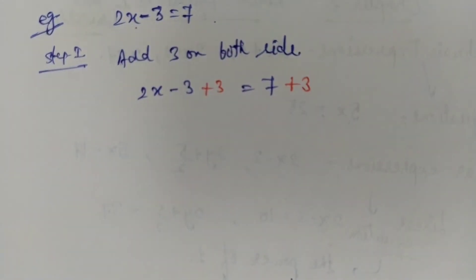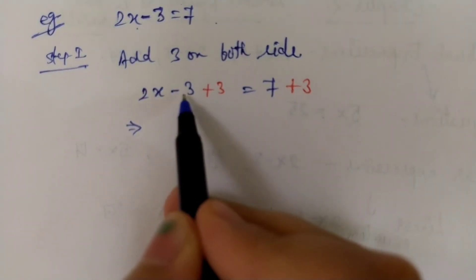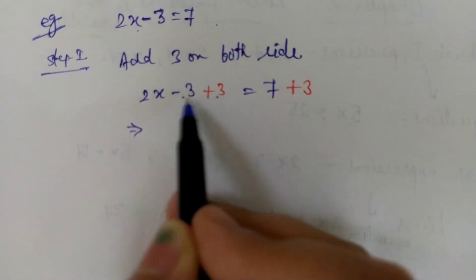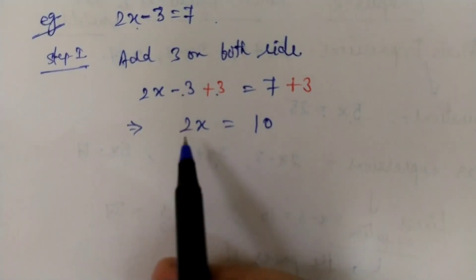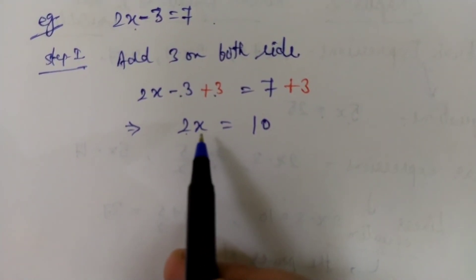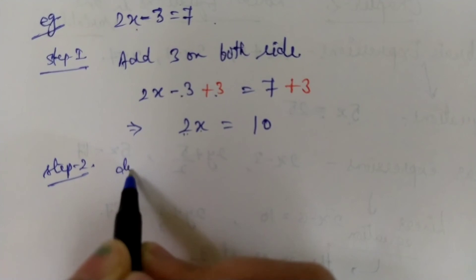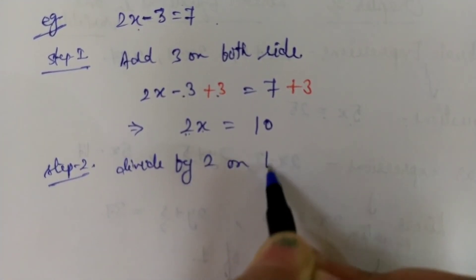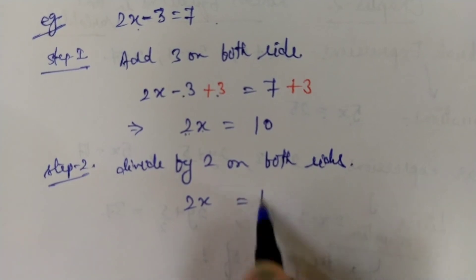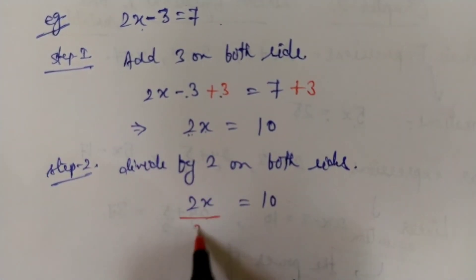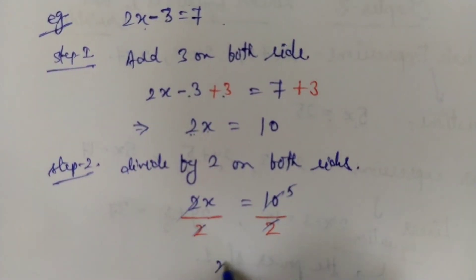After adding 3 on both sides, the minus 3 and plus 3 cancel to zero, leaving 2x on the left side equal to 10 on the right side. The balance is maintained. Now in step 2, since 2 is multiplied with x and we need x alone, we divide both sides by 2. The 2 and 2 cancel, giving us x equals 5.